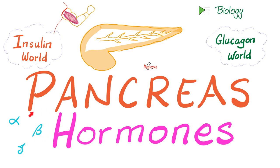Insulin is secreted by the beta cell, glucagon is from the alpha cell, and somatostatin — the doofus — from the delta cell. Why do we call it doofus? Because it's a universal inhibitor.